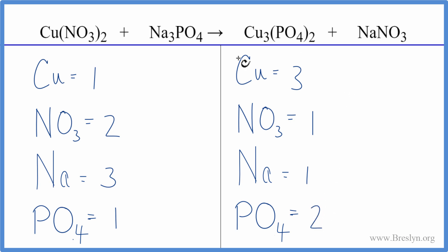Why don't we balance the coppers first, see what that does. So we have three here and one here. We could put a coefficient of three in front of the copper(II) nitrate. That means one times three for the copper, and those are balanced.